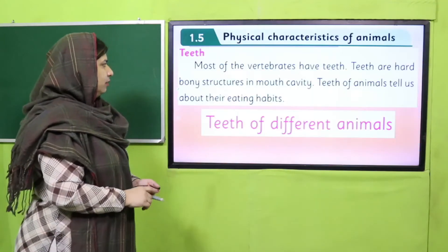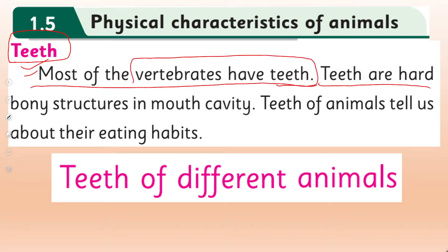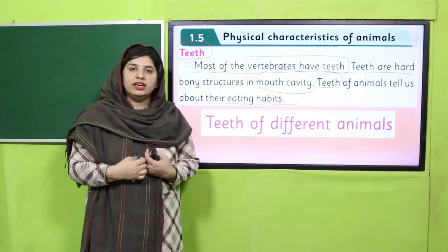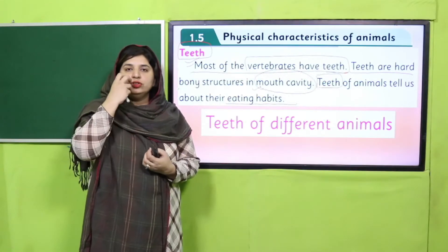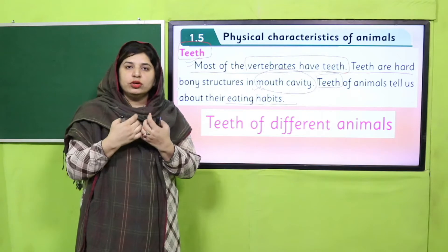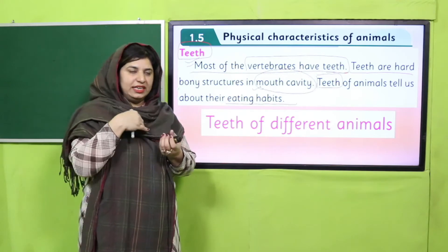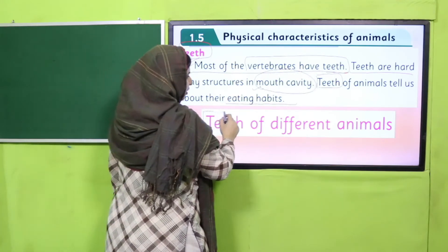Let us go to our main lesson, in which we will learn about the main purpose of teeth in different animals. Most vertebrates have teeth. Teeth are hard bony structures present in our mouth cavity. The structure of teeth depends on different animals' eating habits. Animals depend on their teeth to crush down or cut down food into smaller particles so they can swallow it inside their body. Let us start learning about teeth of different animals.